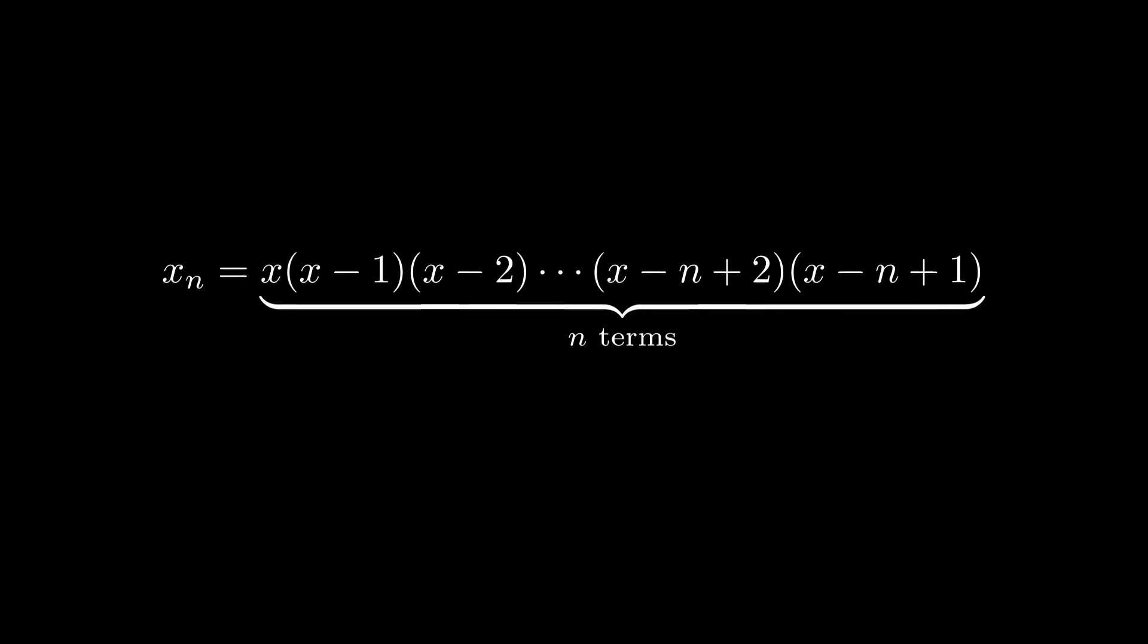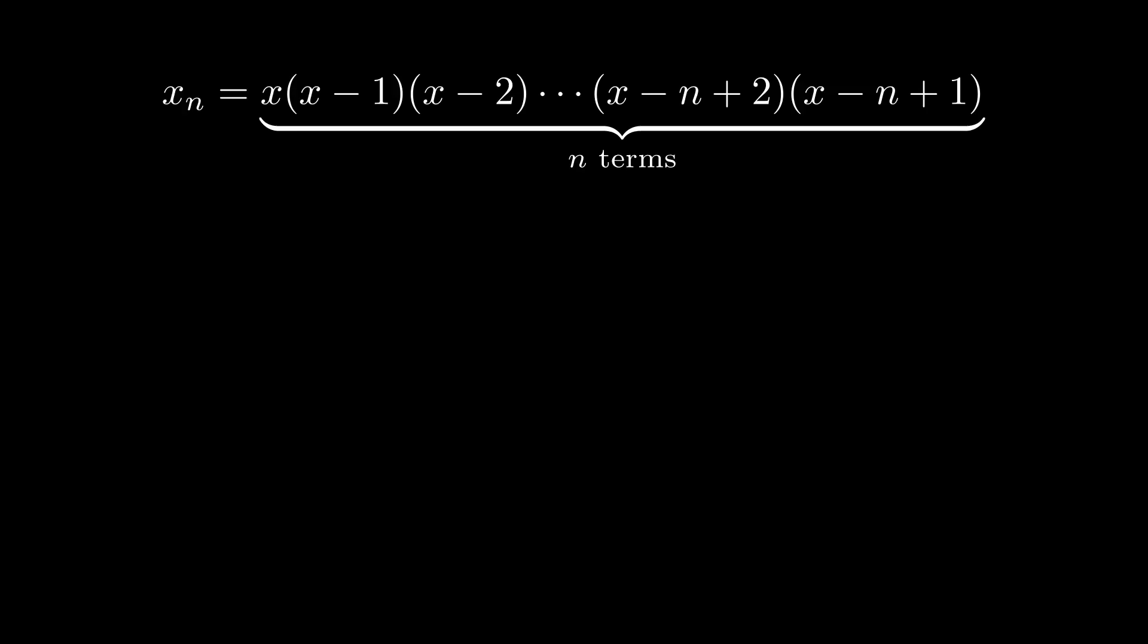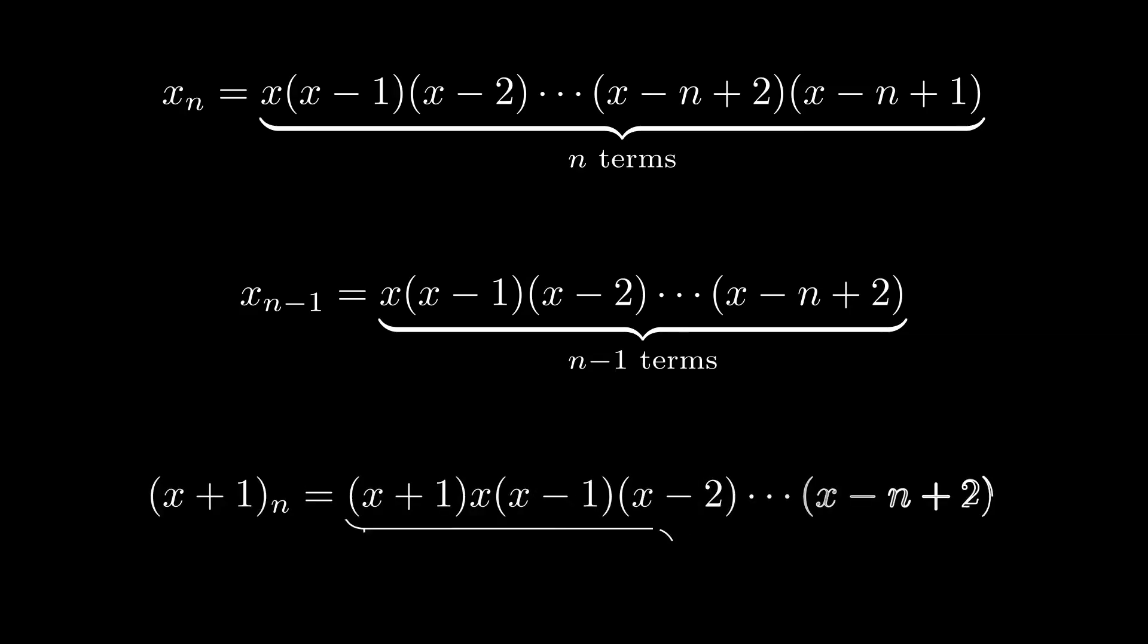They look a bit weird if you haven't seen them before, but if you start playing with them you'll soon find something interesting. x to the falling power n minus 1, for example, is the same product just without the rightmost term. And x plus 1 to the falling n is the same product, but starting at x plus 1 instead of x.